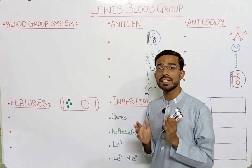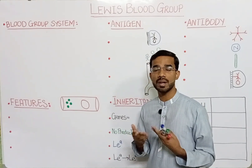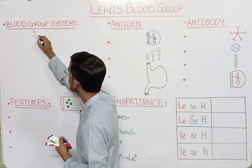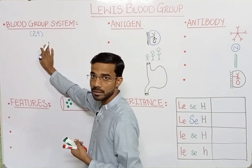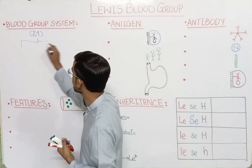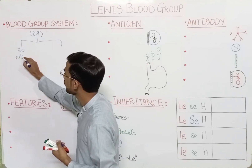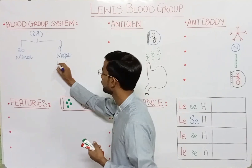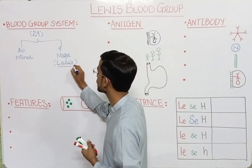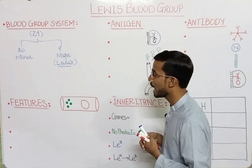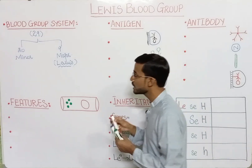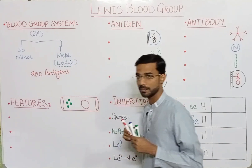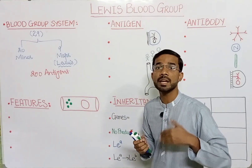There are 29 blood group systems, of which 20 are minor blood group systems and nine are major blood group systems. The total number of antigens across all 29 systems is 200, meaning one blood group system can contain more than one antigen.